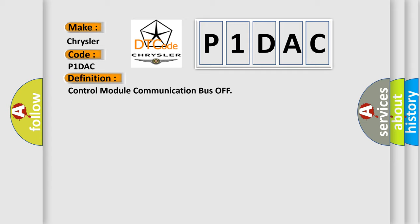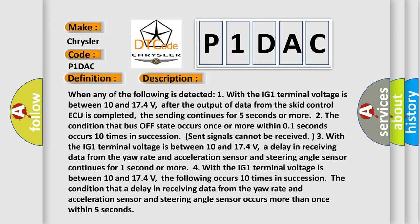Here is a short description of this DTC code. When any of the following is detected: (1) With the IG1 terminal voltage between 10 and 17.4 volts, after the output of data from the SCID control unit is completed, the sending continues for five seconds or more. (2) The condition that bus-off state occurs once or more within 0.1 seconds occurs 10 times in succession. (3) A delay in receiving data from the yaw rate and acceleration sensor and steering angle sensor continues for one second or more. (4) With IG1 terminal voltage between 10 and 17.4 volts, the condition that a delay in receiving data from those sensors occurs more than once within five seconds, happening 10 times in succession.